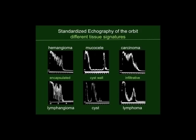Here are six A-scan examples of orbital tumors: hemangioma, mucocele, carcinoma, lymphangioma, cyst, and lymphoma. You see how different they look in terms of amplitude and length of spikes, and in terms of outline — whether it's infiltrative, like carcinoma and lymphoma, or has a cyst wall, like mucocele and orbital cyst, or is encapsulated, like a hemangioma and a lymphangioma.